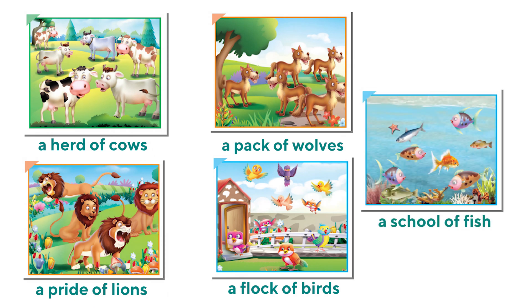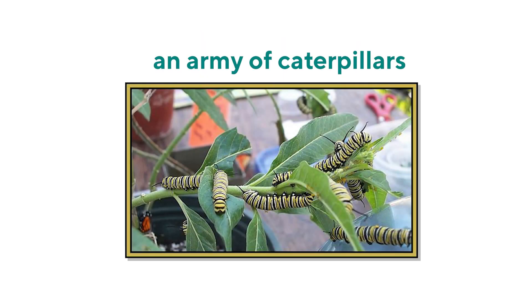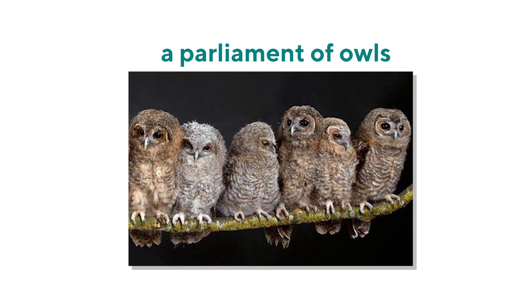A school of fish — not a school of kids! Some are even stranger: a group of crows is called a murder of crows — sounds dangerous! An army of caterpillars, a parliament of owls. You can find more such terms from your books and other resources.